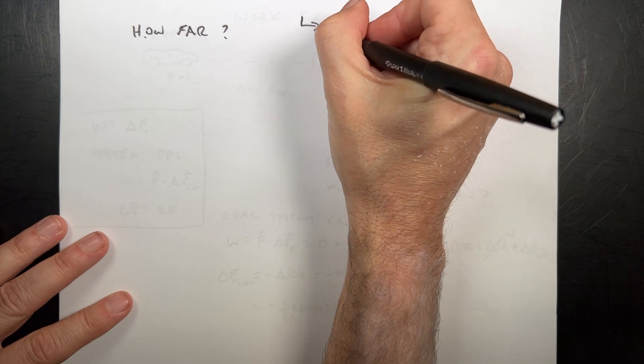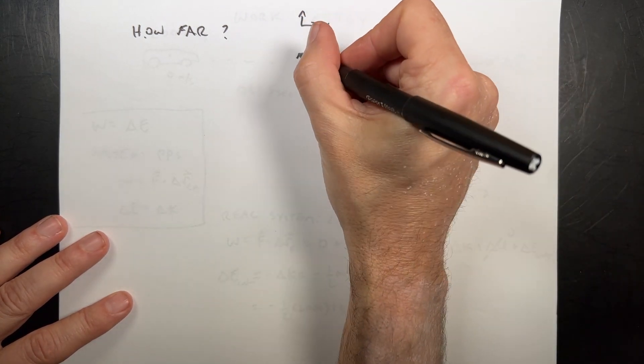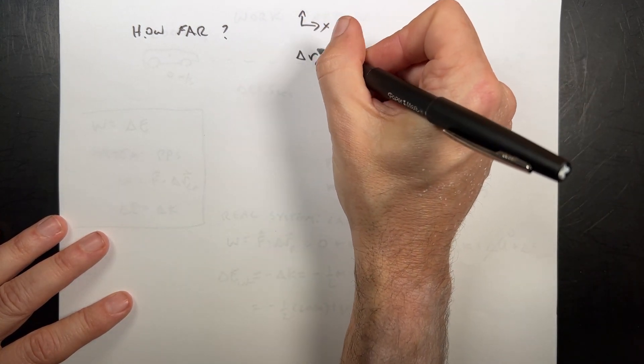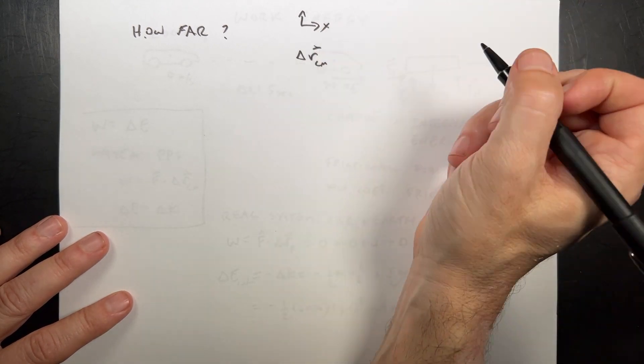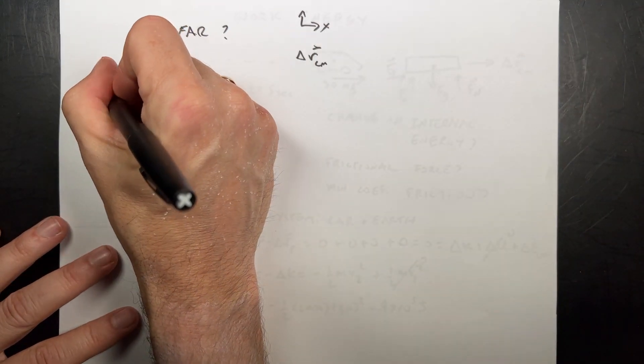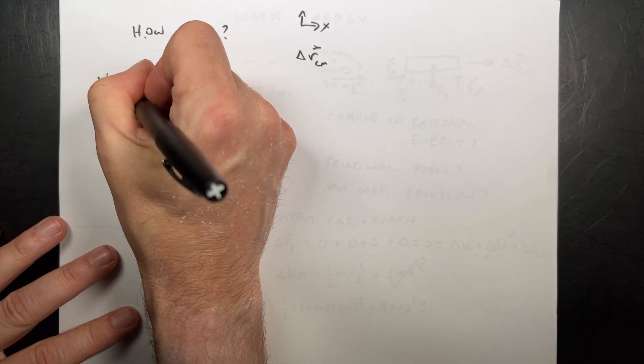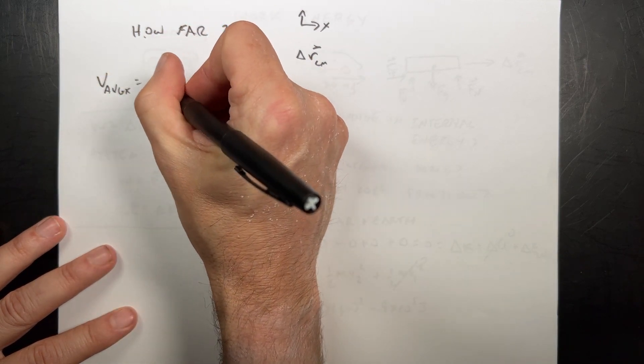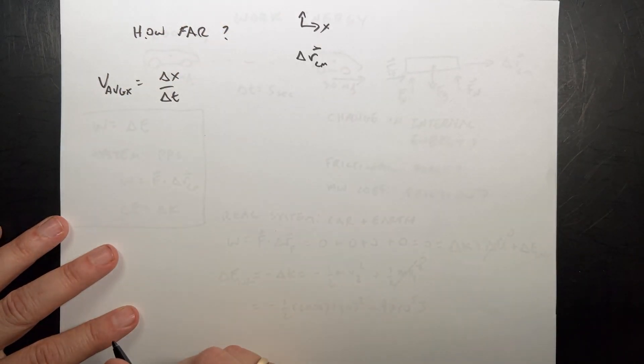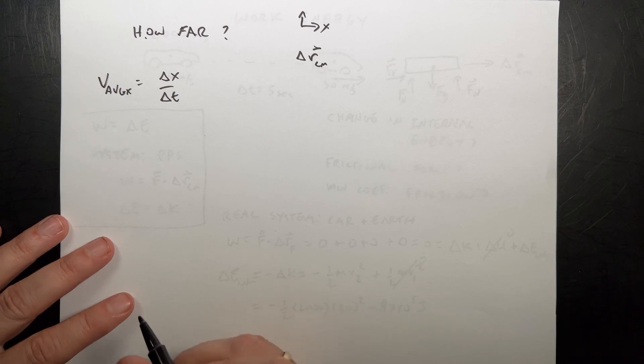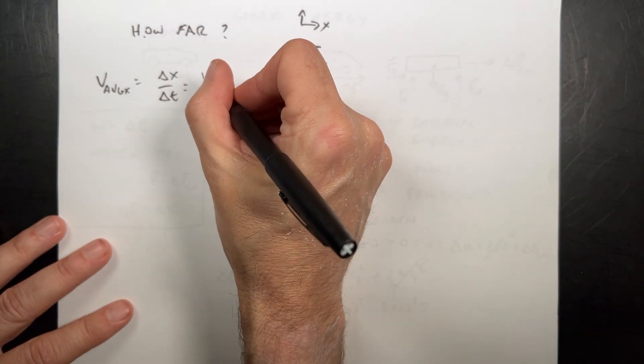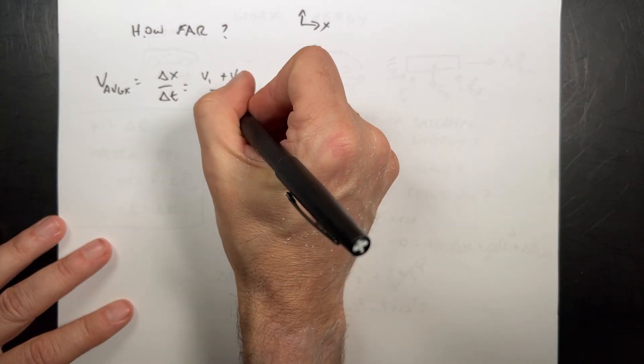So let's say this is the x and the y direction. So I want to find delta r's center mass. Well, let's just look in the x direction. I'm going to say v average x is going to be delta x over delta t. Right? That's how we define average velocity.